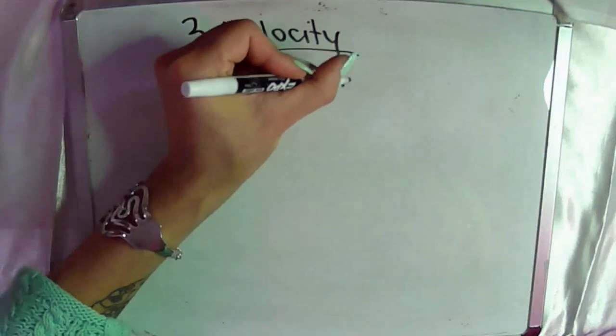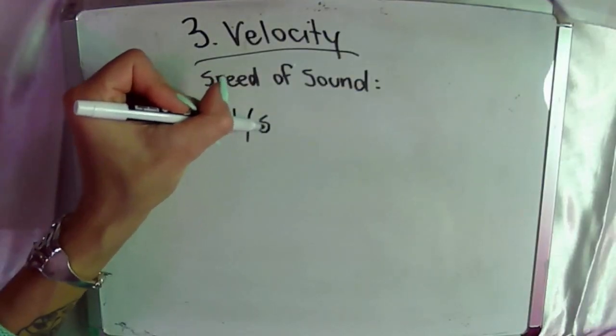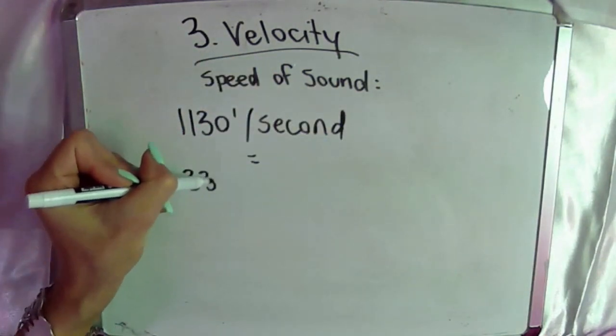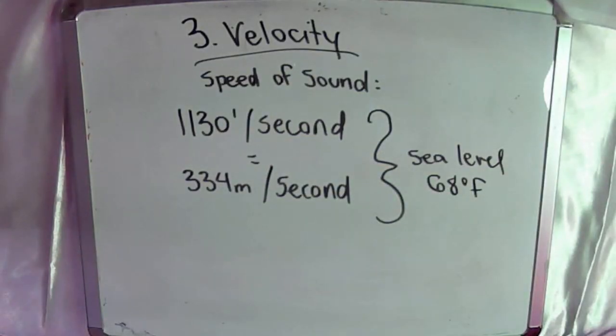The third characteristic of waveforms is velocity, which just means the speed of sound — pretty clearly defined by the laws of physics. Sound travels at 1,130 feet per second or 334 meters per second, but only at sea level at about 68 degrees Fahrenheit. How fast sound travels is temperature and atmospheric dependent, because temperature and atmospheric pressure change how far apart the molecules already are, which means they'll either travel faster together or take longer to push together after a sound event. For every degree Celsius rise in temperature, the speed increases by two feet per second.